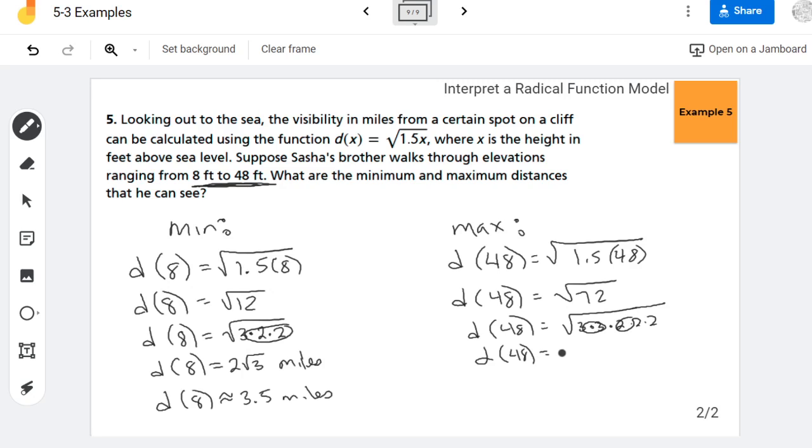So if I go ahead and take out my pairs, I'm taking out a 3 and a 2. So 3 times 2 is 6, so that's 6 root 2 miles.